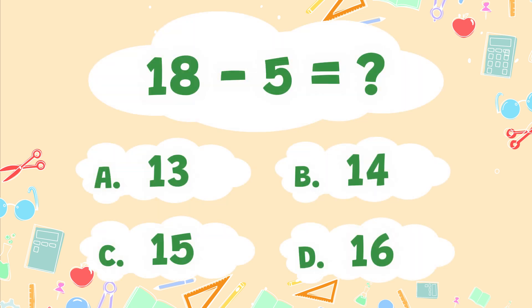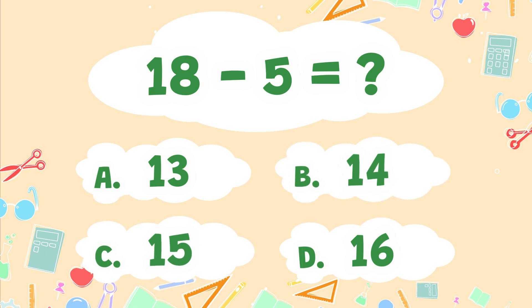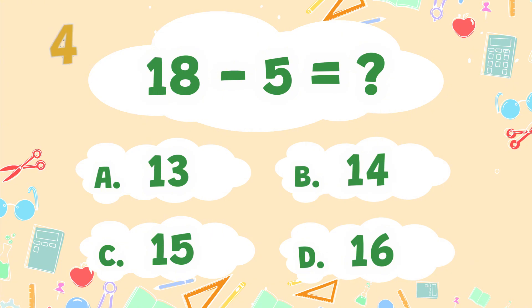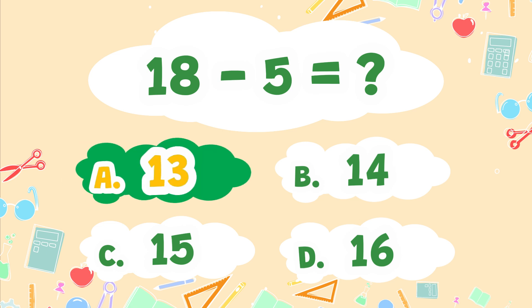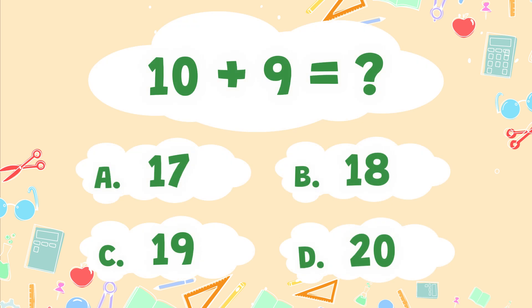What is 18 minus 5? A. 13, B. 14, C. 15, D. 16. The correct answer is A. 13.